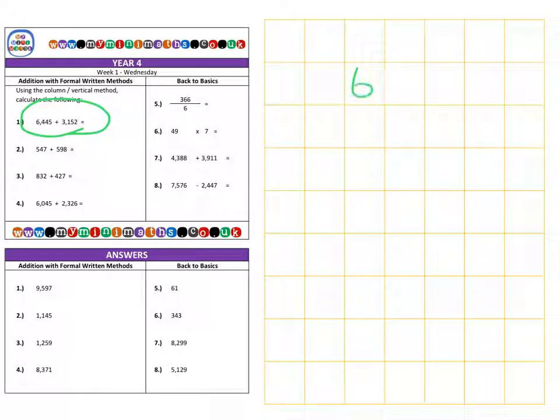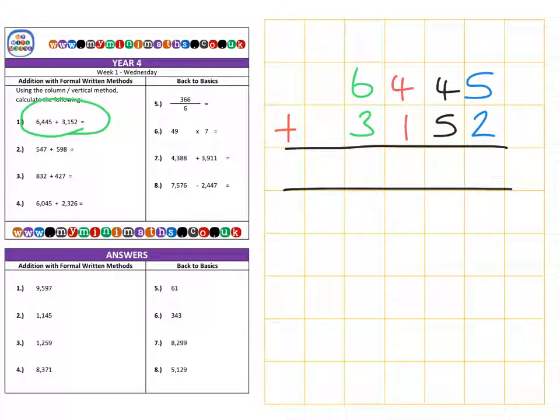We have 6,445 and we're going to add that to 3,152. Now for this question there's no carrying over, so it's a good opportunity to refresh our skills from Monday and Tuesday's Minimaths tasks. Let's rewrite our calculation. First of all we have 5 units add 2 units, which would be 7 units.